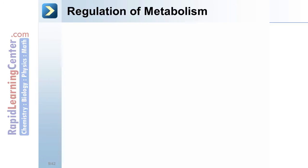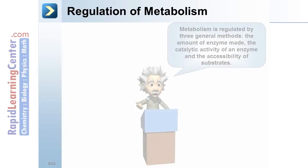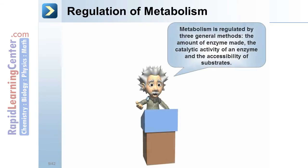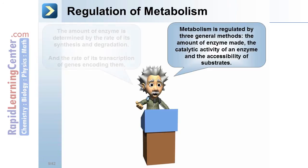Regulation of metabolism. Metabolism is regulated by three general methods: the amount of enzyme made, the catalytic activity of an enzyme, and the accessibility of substrates.